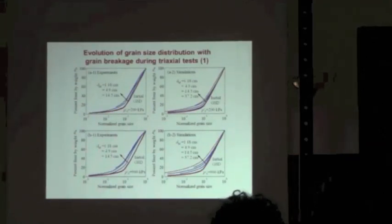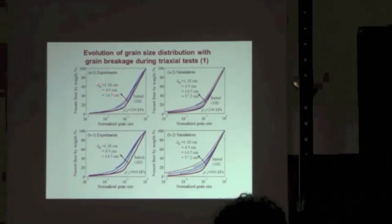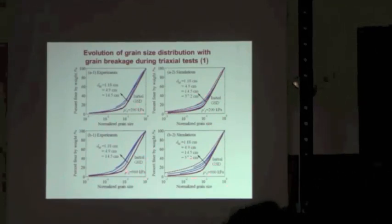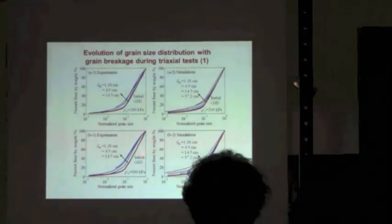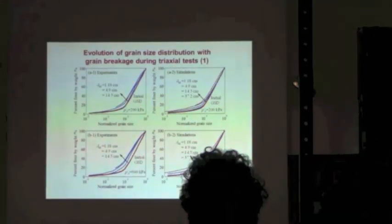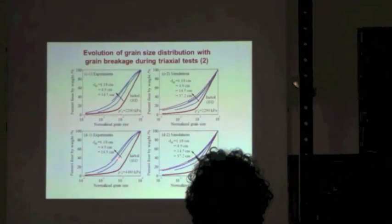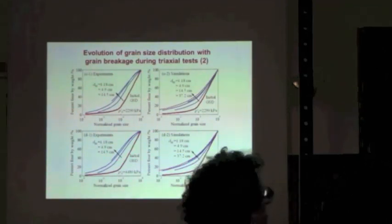We also looked at the evolution of the grain size distribution. Here you have the experiments and here the simulation, for three different grain size distributions — plus the field gradation again in red. You can see that when you increase the confining pressure you develop more and more grain breakage. The simulation results are quite similar to what was observed and measured by Marachi. At the highest confining pressure there is a very large amount of grain breakage, both in experiments and simulations.